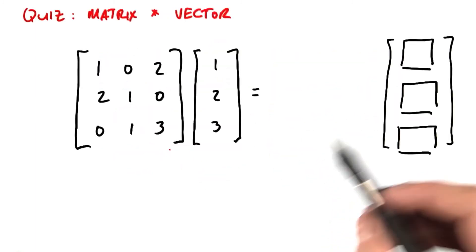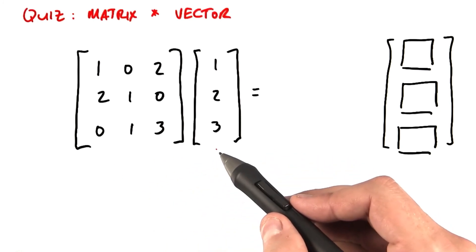So let's do a matrix times a vector as a quiz. We're going to have this sample 3 by 3 matrix times this sample 3 by 3 vector. And I'd like you to write the vector answer in these three blanks here.